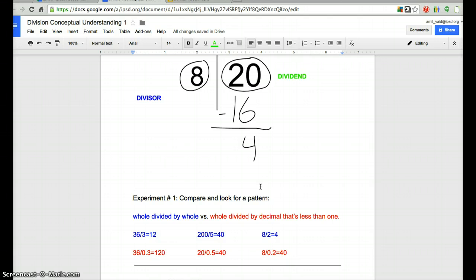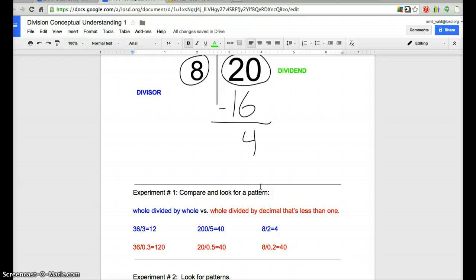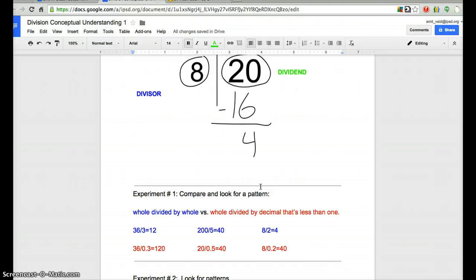Now finally, to end this lesson, I'd like you to do what we've done in the last couple days of class, which is make discoveries on your own, just using evidence that's provided to you. Take a look at this experiment called Compare and Look for a Pattern. What I did in the blue font is I took a whole number, like 36, and I divided it by another whole number, like 3, and I got these types of quotients. 36 divided by 3 is 12, 200 divided by 5 is 40, and 8 as my dividend splitting that amongst 2 gives me 4 as my quotient.